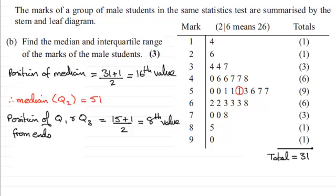So if we take Q1, so we'll put therefore Q1, the lower quartile, come in 8 values: 1, 2, 3, 4, 5, 6, 7, 8. There we go, it's going to be 46. So lower quartile is 46.